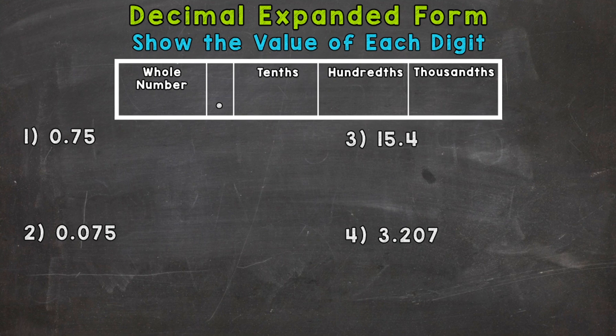And we have four examples that we're going to go through together in order to get this down. Now when I say expanded form, what we're going to do is expand these numbers out to show the value of each digit.